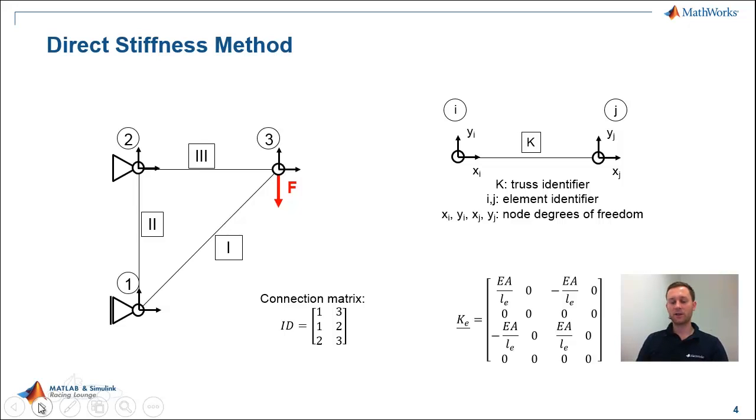Another information that is very important, I've given it the name connection matrix or ID matrix. It's a two column matrix with some numbers in it, but it's quite easy. The first line in that matrix is representing the first truss element. And which nodes are attached to the first truss element, those are nodes 1 and 3. And this is stated here.